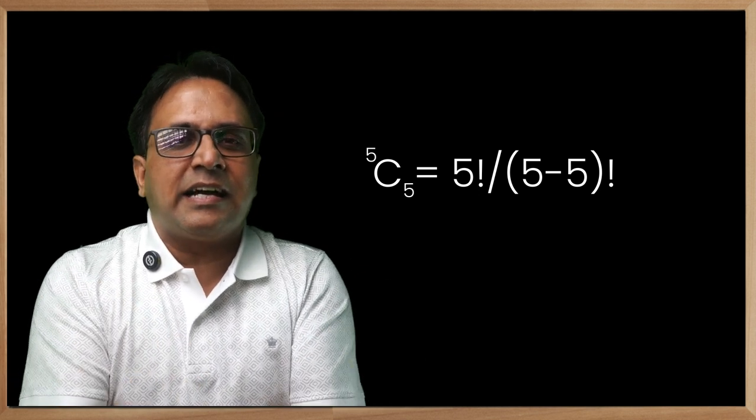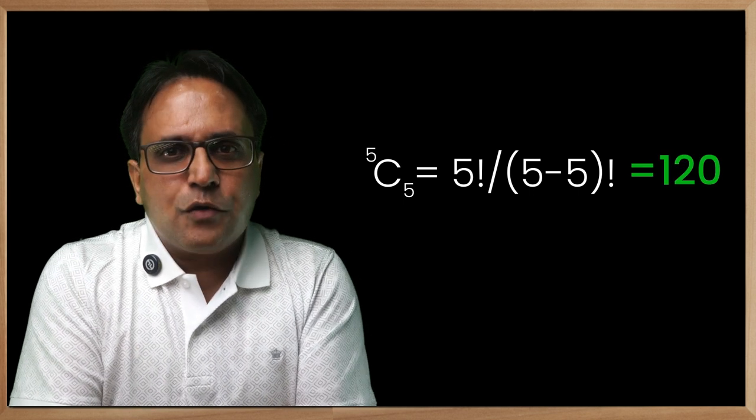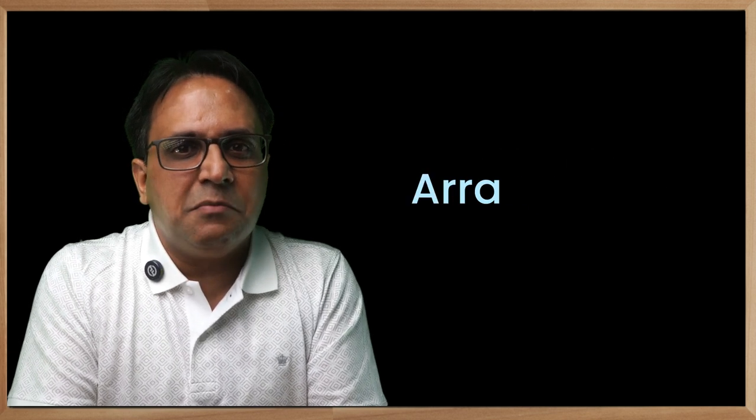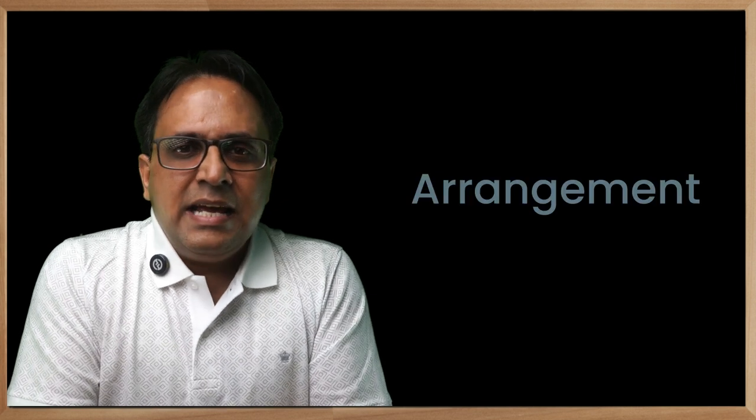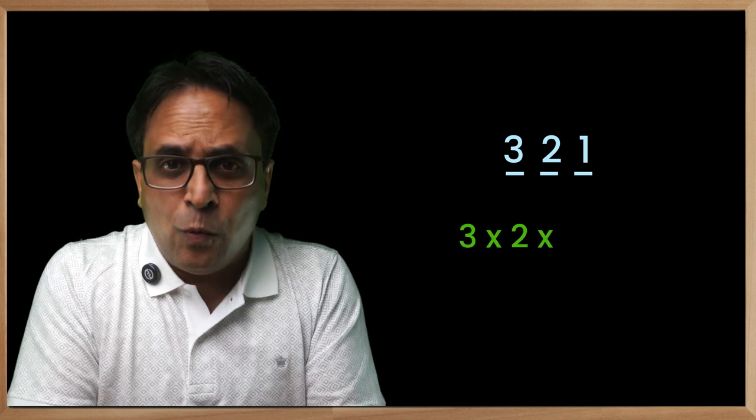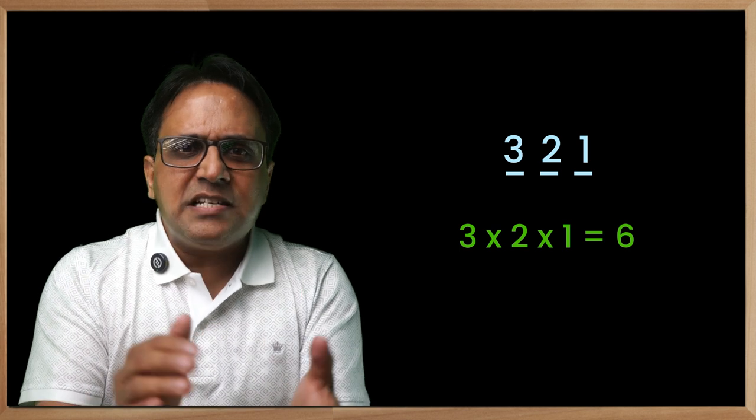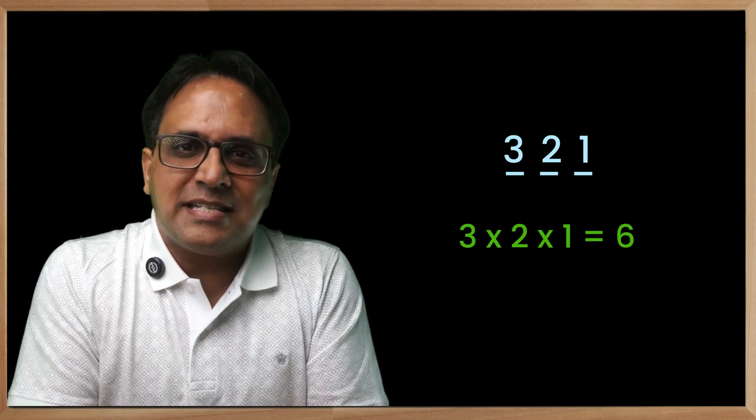What we have understood from this is that combination is nothing but arrangement of entities. The other way to understand this is: in how many ways can I fill the slots? The first position can be filled by any of these three digits, then the second one by any of the remaining two digits, and the third one is only left with one. That also makes my calculation 3 × 2 × 1, and that is 6.